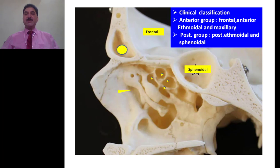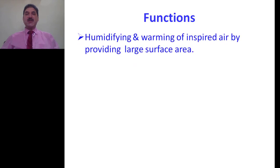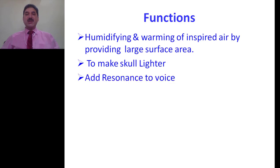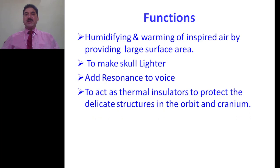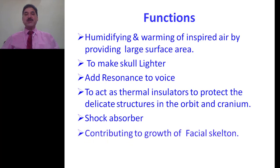The frontal air sinus is contained within the frontal bone. Ethmoidal air sinuses are contained within the ethmoidal bone. Maxillary air sinuses are contained within the maxilla, and sphenoidal air sinuses are contained within the body of the sphenoid, as shown in this figure. The functions of the paranasal air sinuses are: humidifying and warming of inspired air by providing large surface area of contact; they make the skeleton lighter; they add resonance to the sound; they act as thermal insulators to protect the delicate structures in the orbit and cranium; they also act as shock absorbers; and these sinuses contribute to the growth of the facial skeleton as age advances towards puberty.